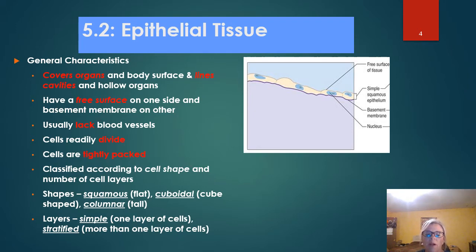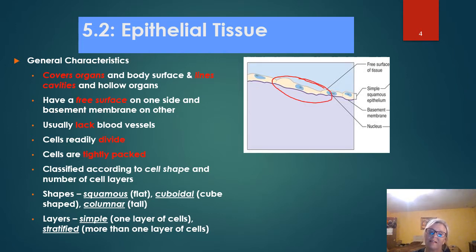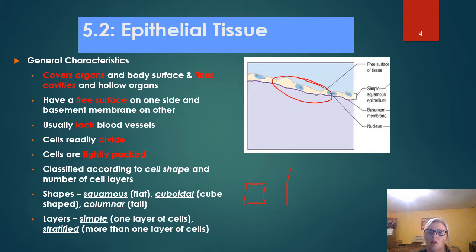The shape — we have three basic shapes. We have squamous, which is flat. Then we have cuboidal, which is roughly square or cube-shaped, and then columnar. Cuboidal is going to be like this, and columnar is going to be a little bit more elongated — it's going to be taller. We do have some intermediates and we will talk about how to tell which one it is if they look really close.